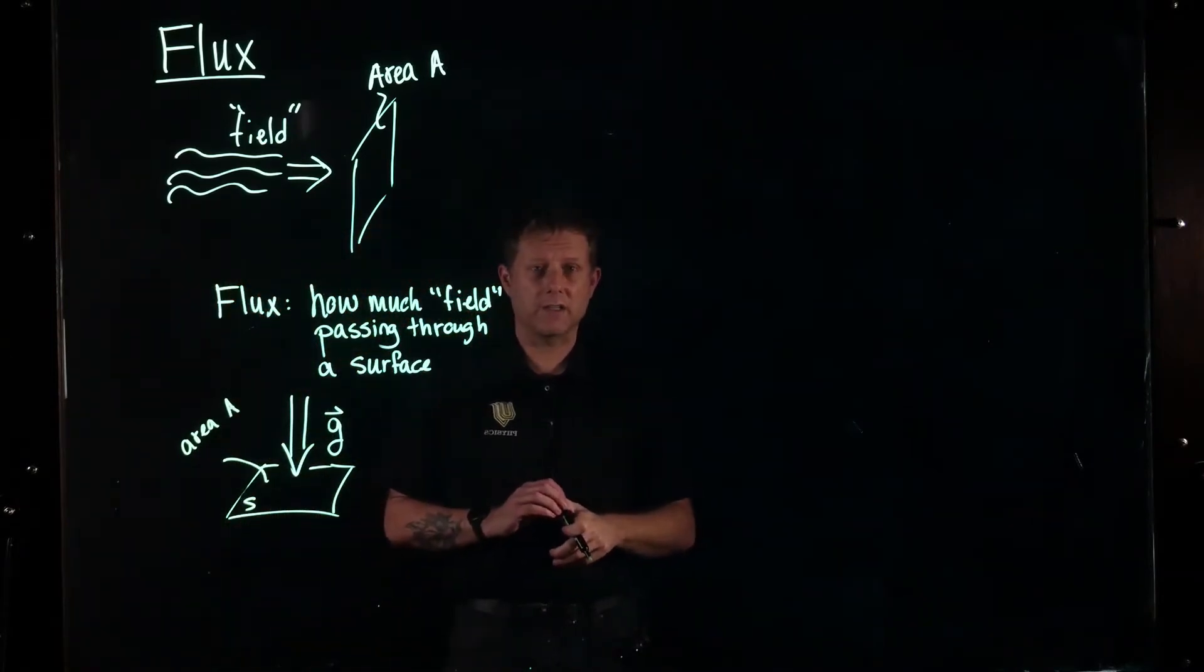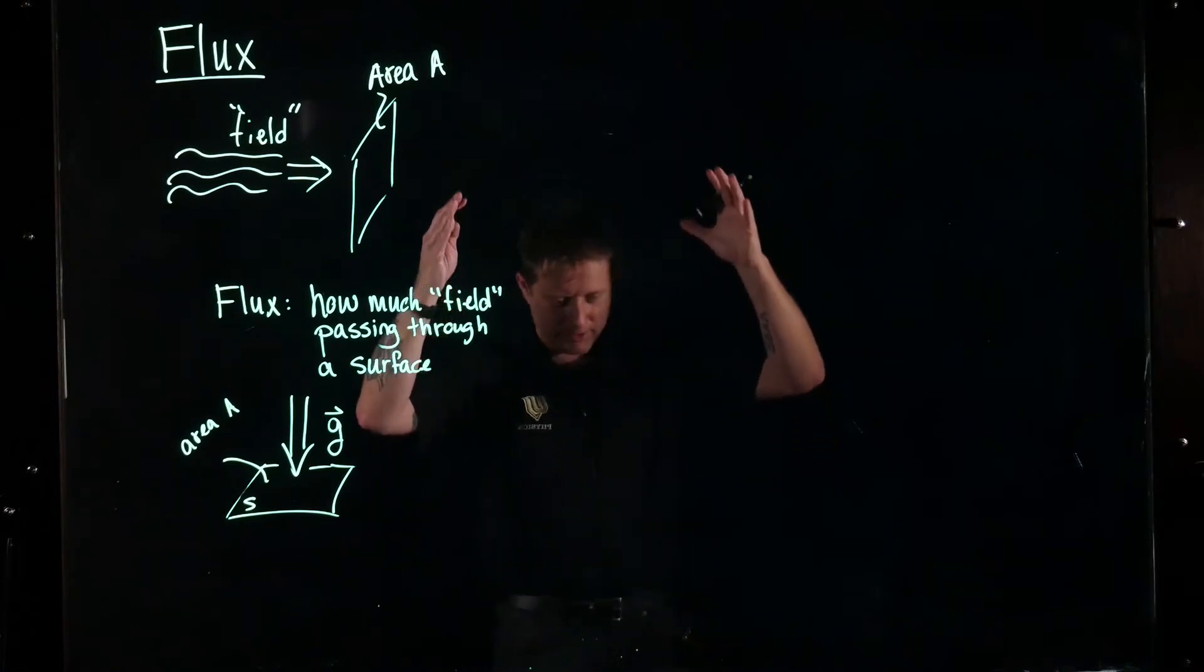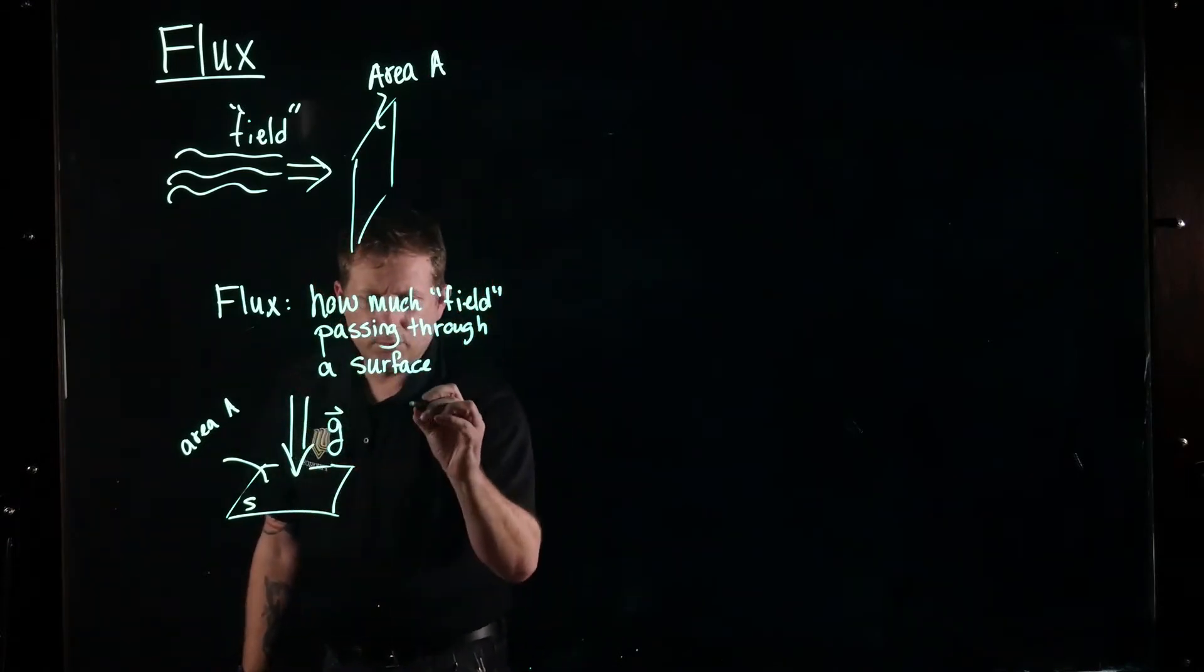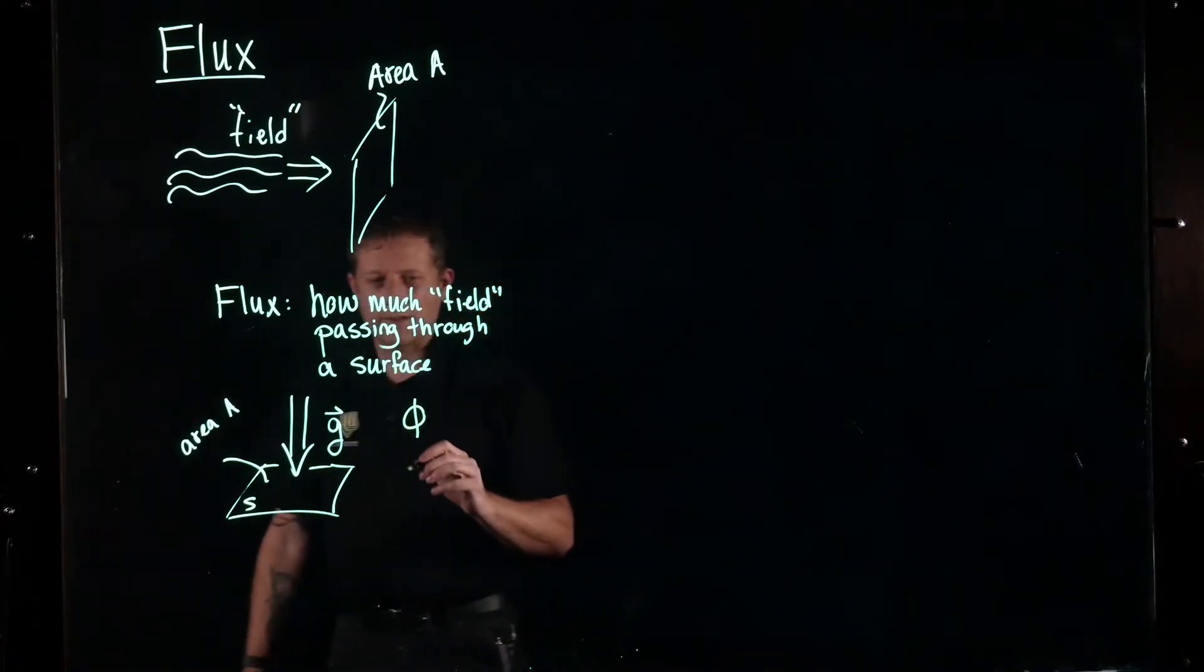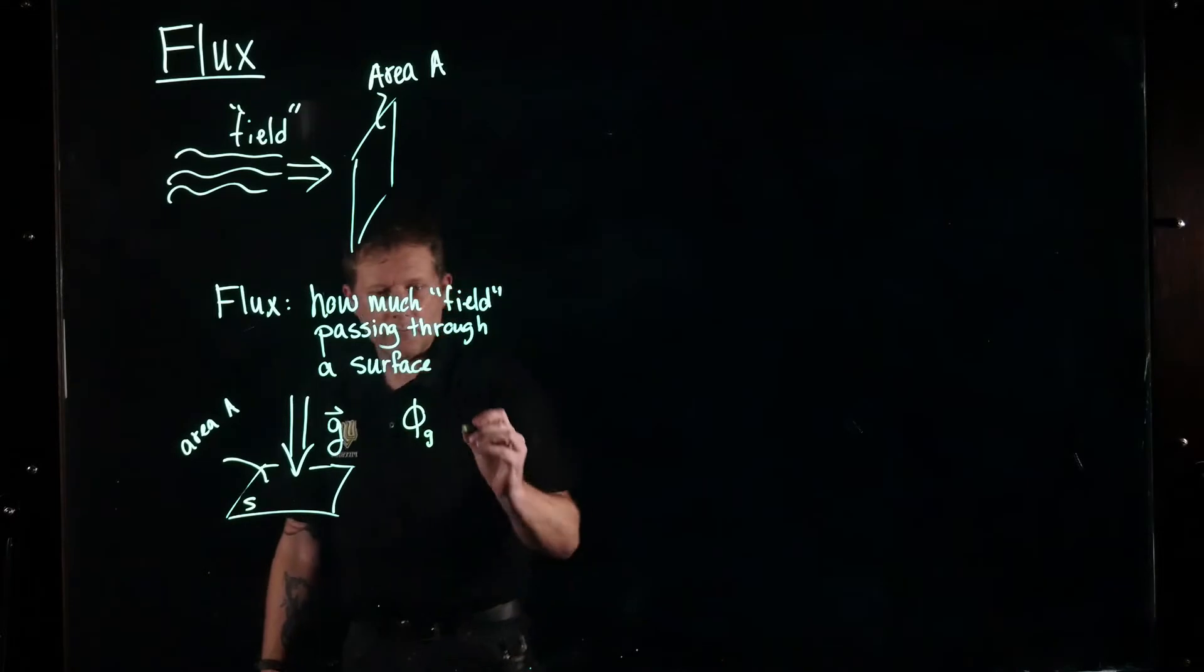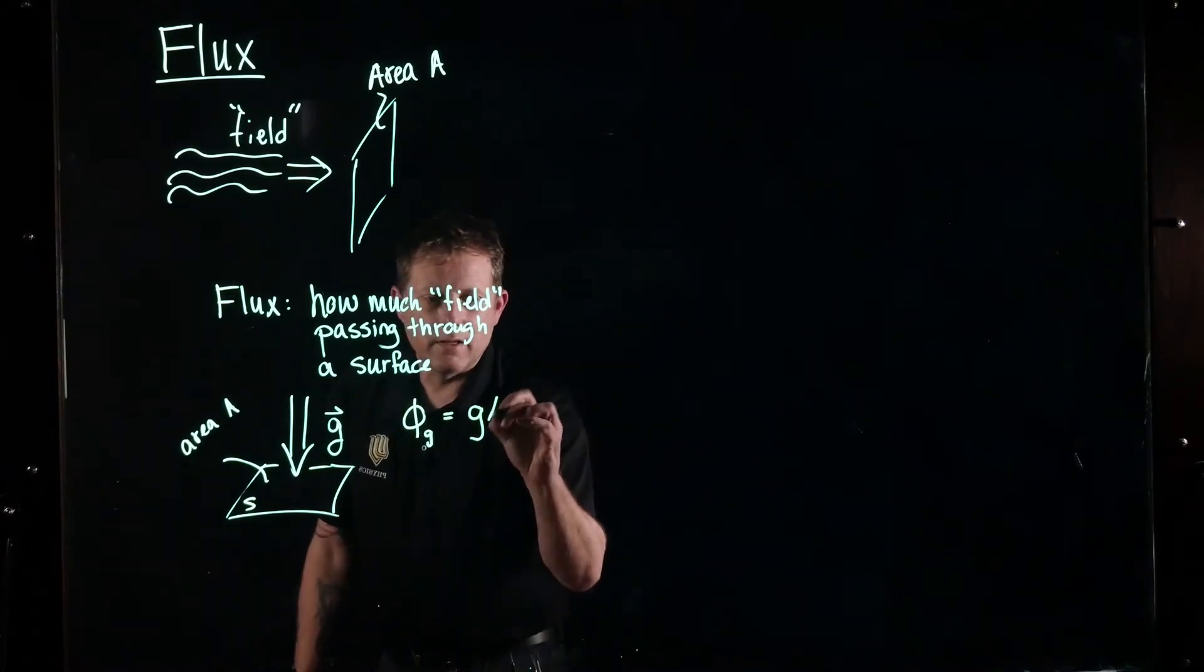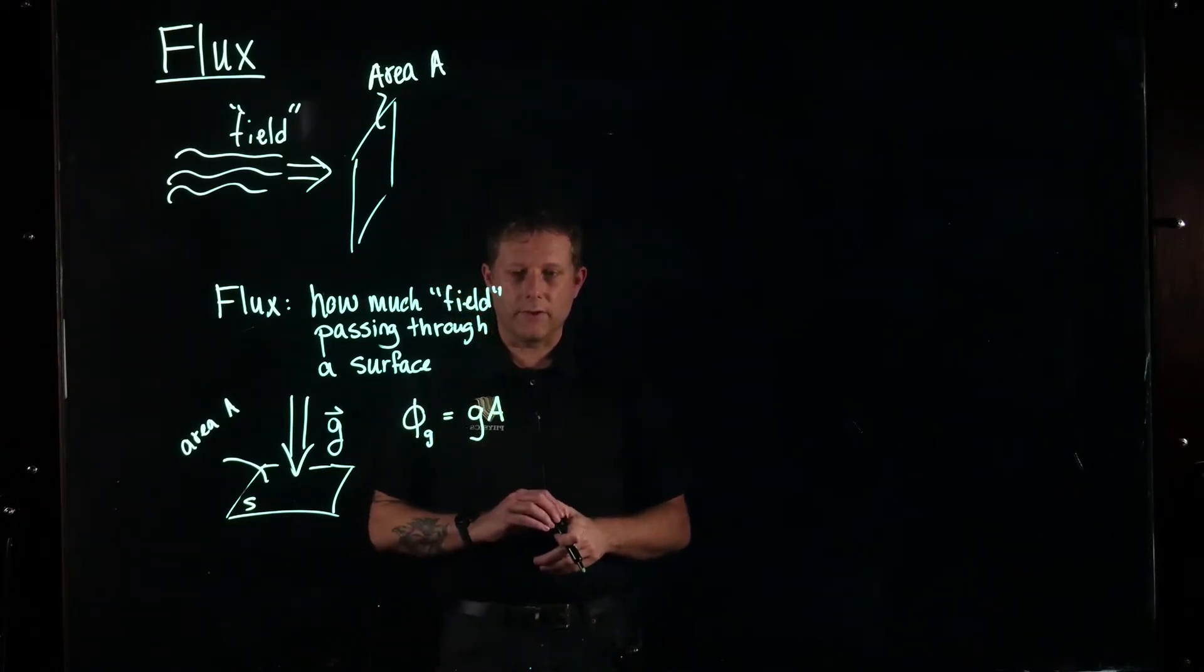We're going to ask ourselves how much flux is passing through. Imagine this gravitational field is just like the water field, just a chunk of gravitational field. Of course we can't see it or touch it, but we can imagine it's similar. We just have this chunk of field that's dumping through the surface. So the flux passing through here, we use this Greek letter, I think it's psi, psi. I'm going to put subscript G to show this is the gravitational flux is equal to how much field we have, G, times the area.